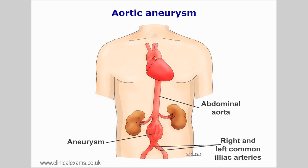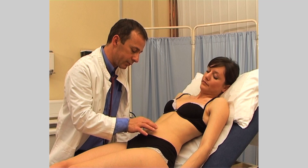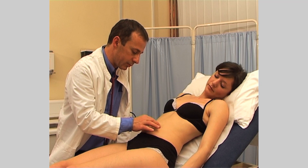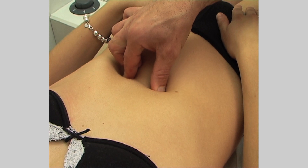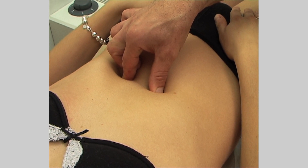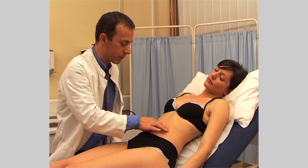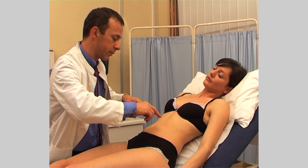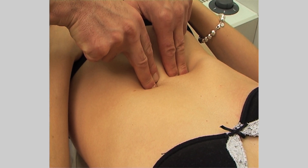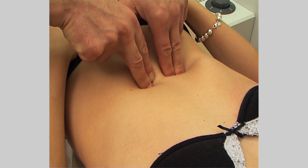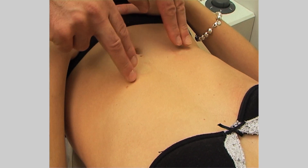Have you been able to observe an abnormal pulsation on the patient's abdomen? Feel for the laterally expansive pulsations on the abdomen. Press your fingertips firmly but gently over the center of the abdomen and move laterally until you can no longer feel the pulsations.